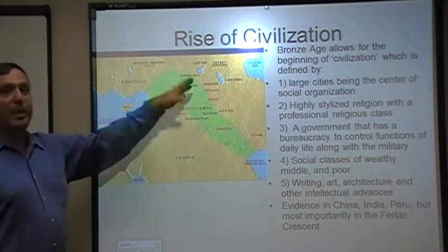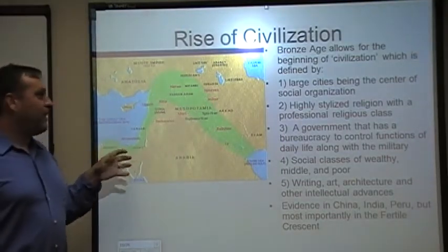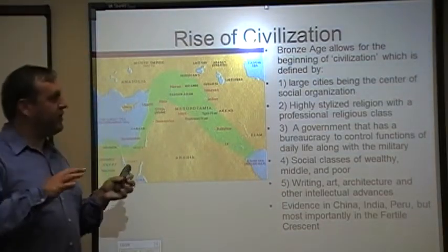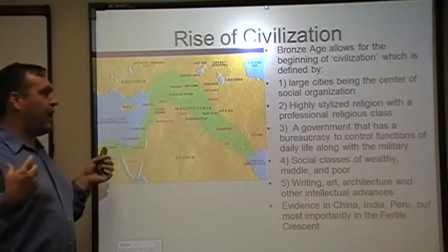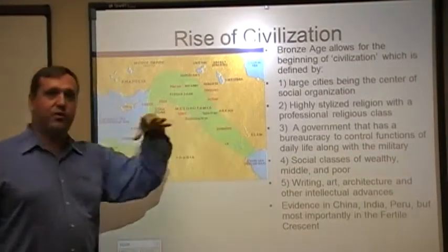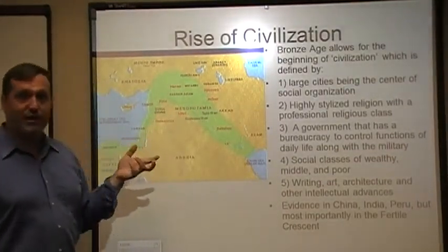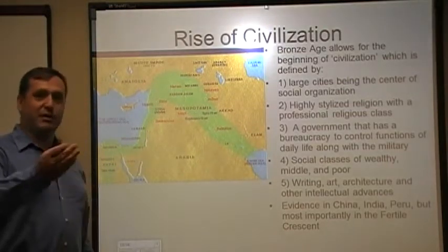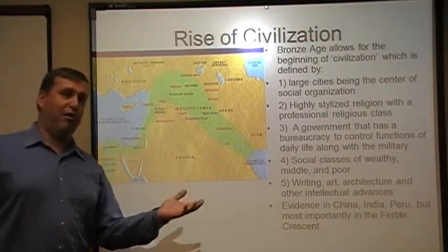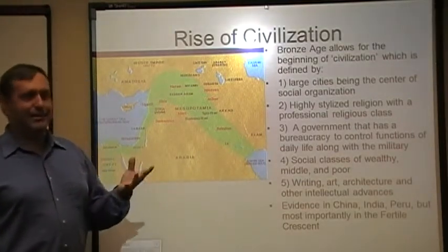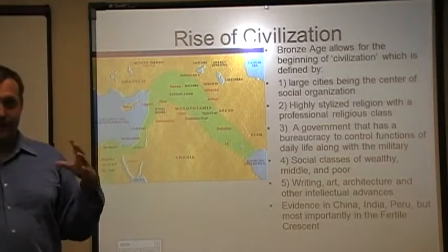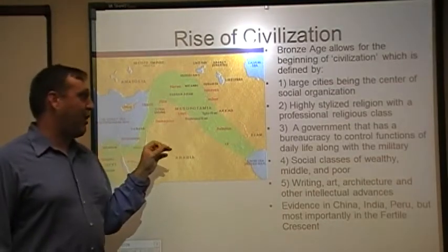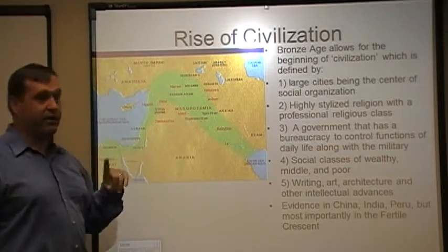So we've kind of set the stage. We've got people living in settled areas, but we don't necessarily have a civilization yet. We need to talk very quickly about what civilization is because this is an important definition. When we as historians and social scientists use this term civilized or civilization, it has a fairly specific technical meaning. We normally use it casually to say people acting uncouth are uncivilized — you used the wrong fork at dinner, you're uncivilized. That's a hyperbole and doesn't have a specific meaning.